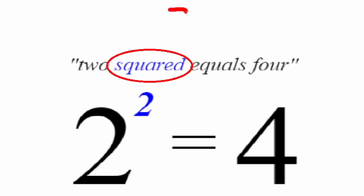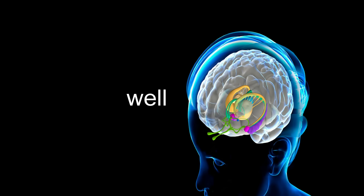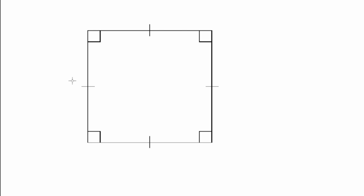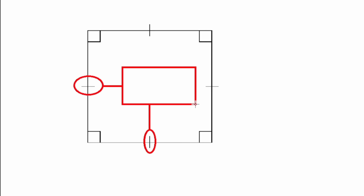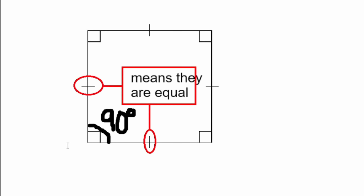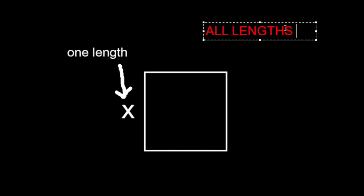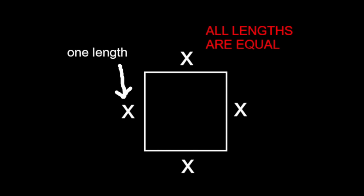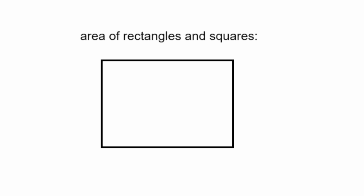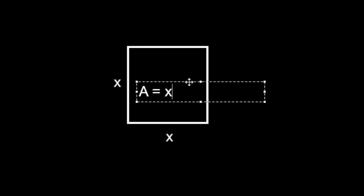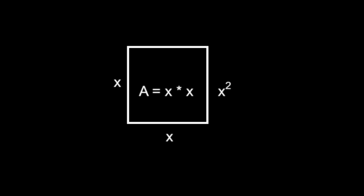But why do we call it squared? Imagine x is the side length of a square. We know all squares must have equal sides that are perpendicular. Given that x is one length and all lengths are equal, we know that all lengths are x. We also know that the area of a rectangle is the length of the perpendicular sides multiplied. So the area of a square is x times x — x squared. Now you know what a square is.